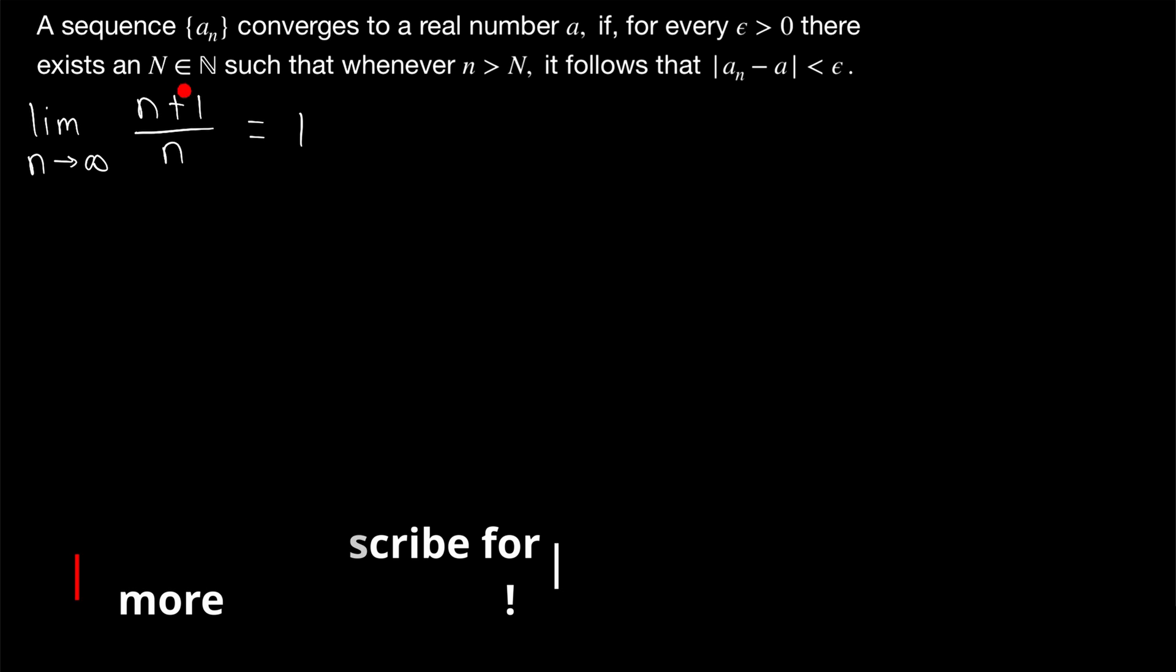We're going to prove that the sequence n plus 1 over n converges to 1. That is, the limit as n approaches infinity of n plus 1 divided by n equals 1.